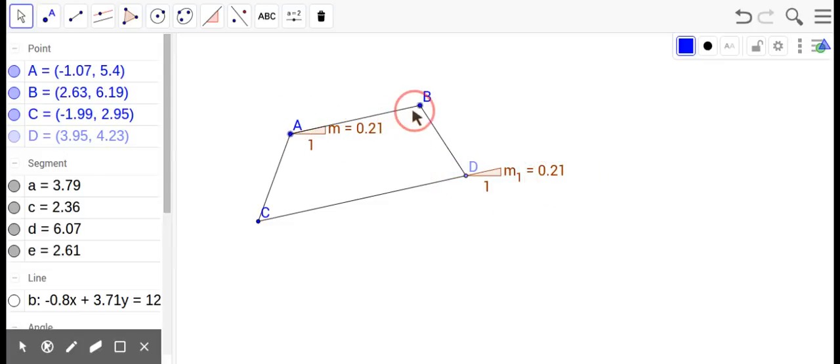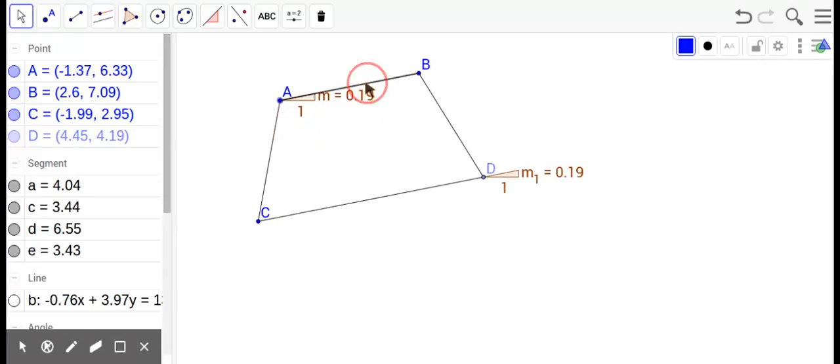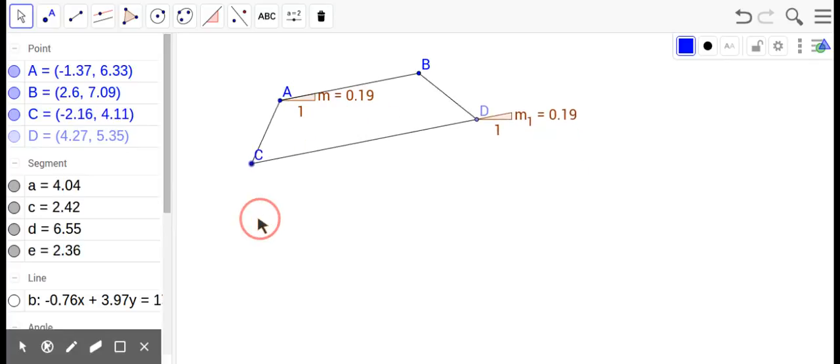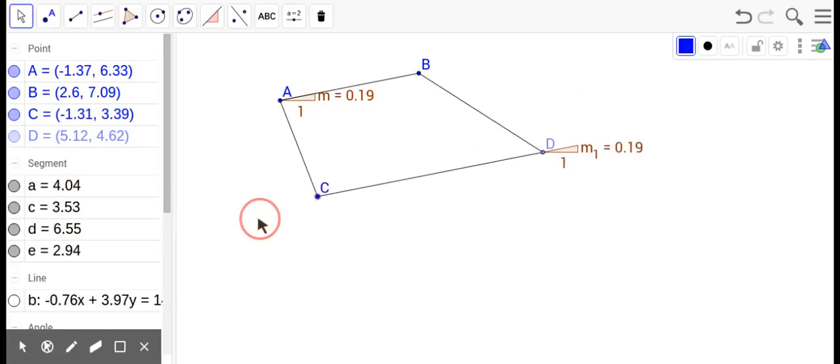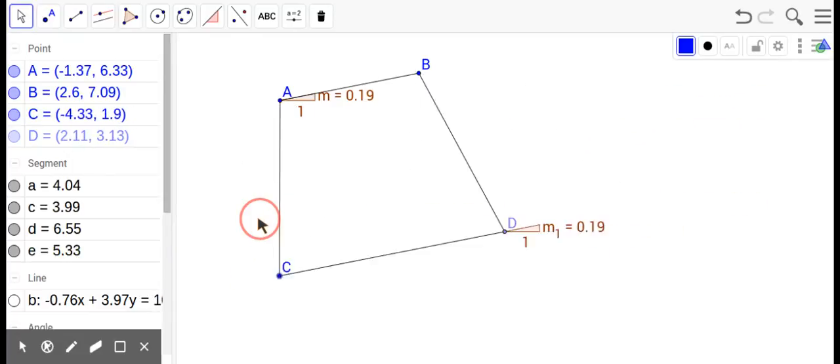Remember what M stands for in algebra? M stands for slope. So as you know, a trapezoid has one set of parallel lines. So the M's are telling us that those are parallel. No matter what I do with them, in order for it to be a trapezoid, they always must be parallel.